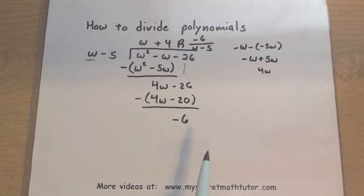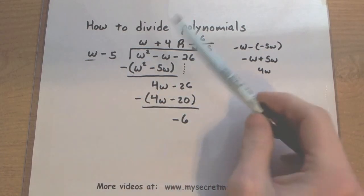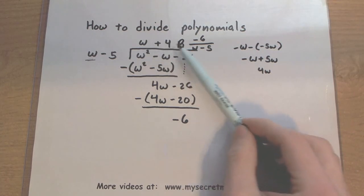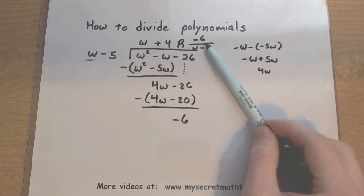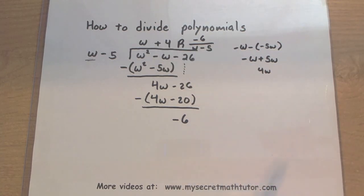So my final answer, when taking the w squared minus w minus 26, and actually divide it by the w minus 5, my answer becomes w plus 4 with a remainder of negative 6 divided by w minus 5.